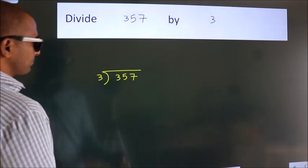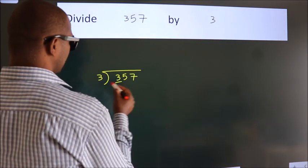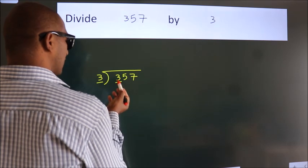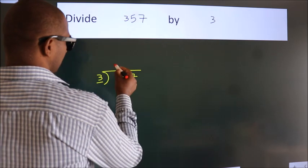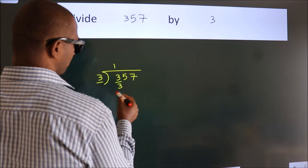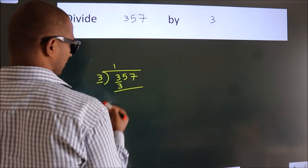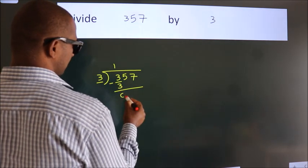Next, here we have 3, here 3. When do we get 3? In 3 table, 3 once, 3. Now, we should subtract. We get 0.